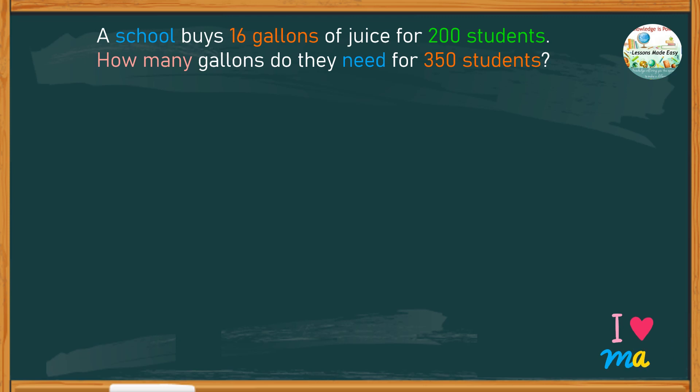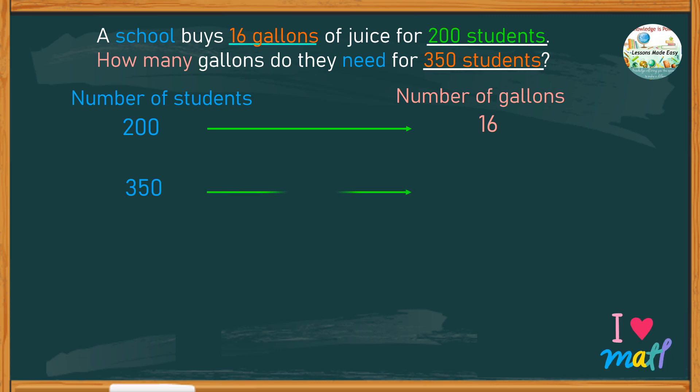Let's analyze the facts given in the problem. This problem shows the relationship between the number of students to the number of gallons of juice. It states that for 200 students, they would need 16 gallons. What happens when the number of students is increased to 350? How many gallons of juice are required?